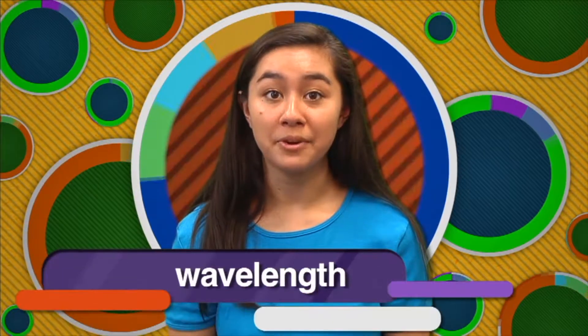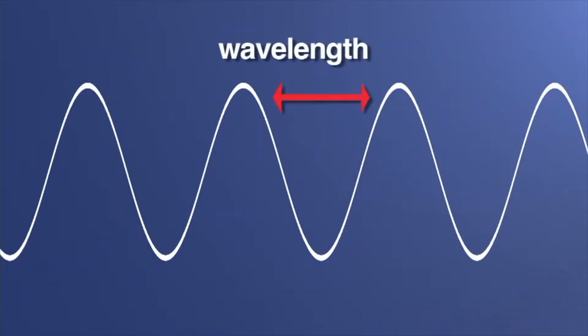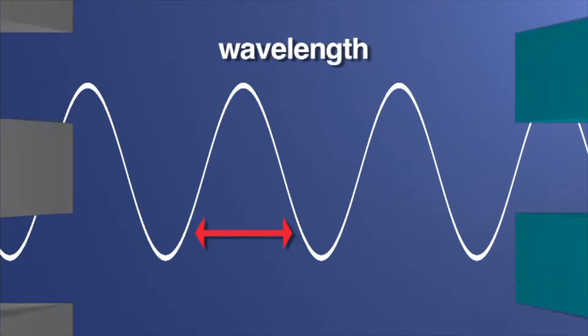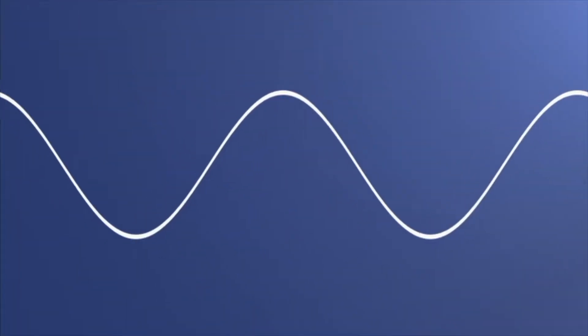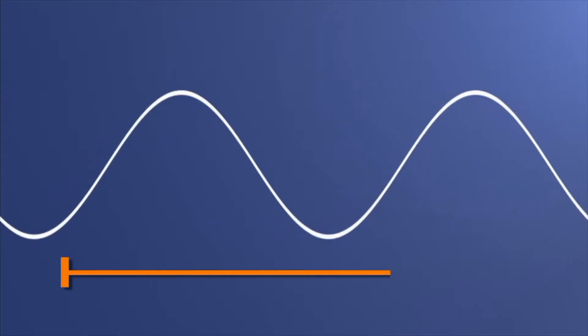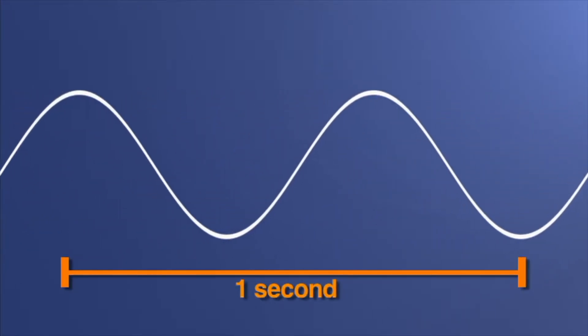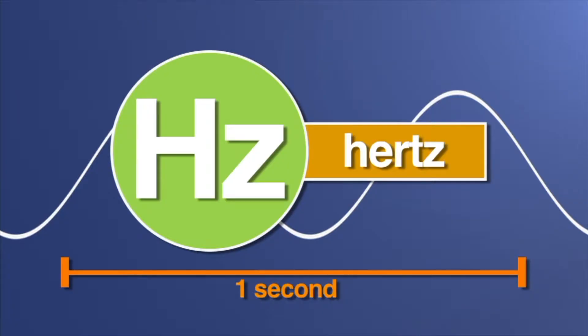Another type of sound property is wavelength. This is the measurement of the distance between two high points or two low points on a wave. Frequency is another property of sound. This is a measurement of the number of waves that pass a certain point in a given time period. Frequency is measured in units called hertz, shown as the symbol Hz. One unit of frequency is equal to one cycle per second. The more energy a sound has, the higher its frequency. Frequency determines what is called the pitch of sound — how high or low a sound is.